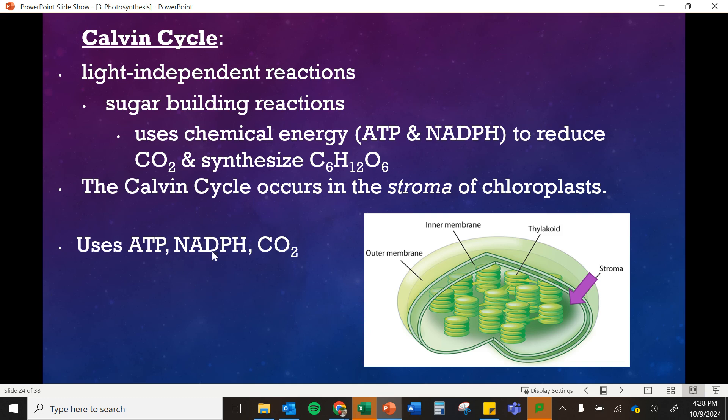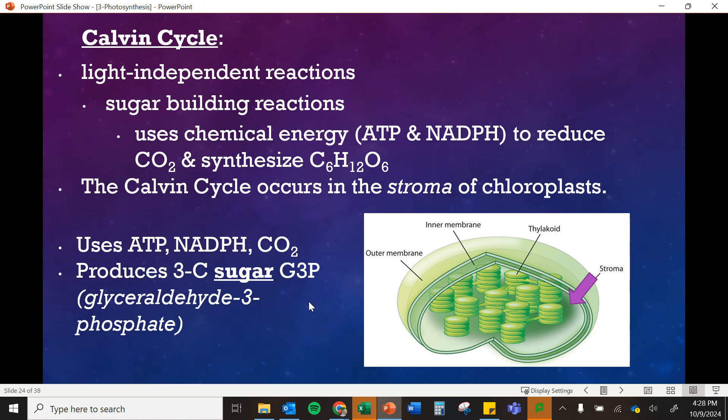So it's using the ATP and NADPH and CO2 and it's producing something called glyceraldehyde 3-phosphate or G3P, which is used to make glucose.